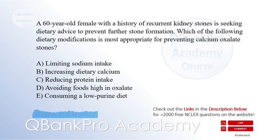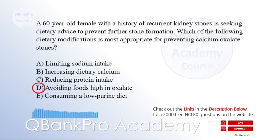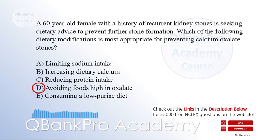E. Consuming a low-purine diet. The correct answer is D. Avoiding foods high in oxalate. Explanation: Calcium oxalate stones are the most common type of kidney stones, and dietary modifications play a crucial role in prevention. Limiting sodium intake is beneficial to prevent certain types of stones, but it is not specific to calcium oxalate stones.